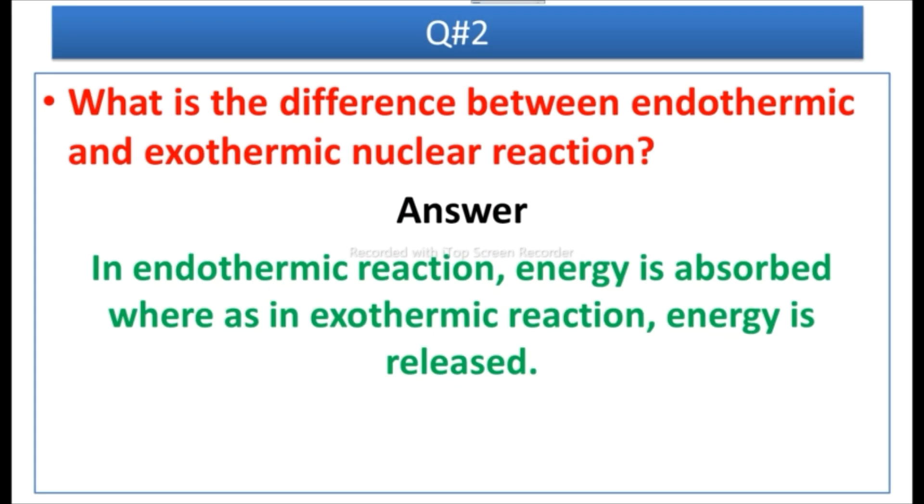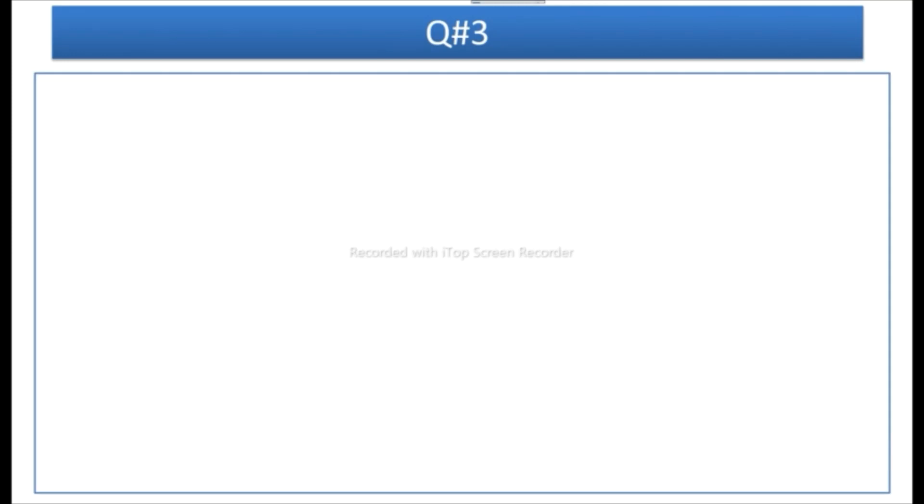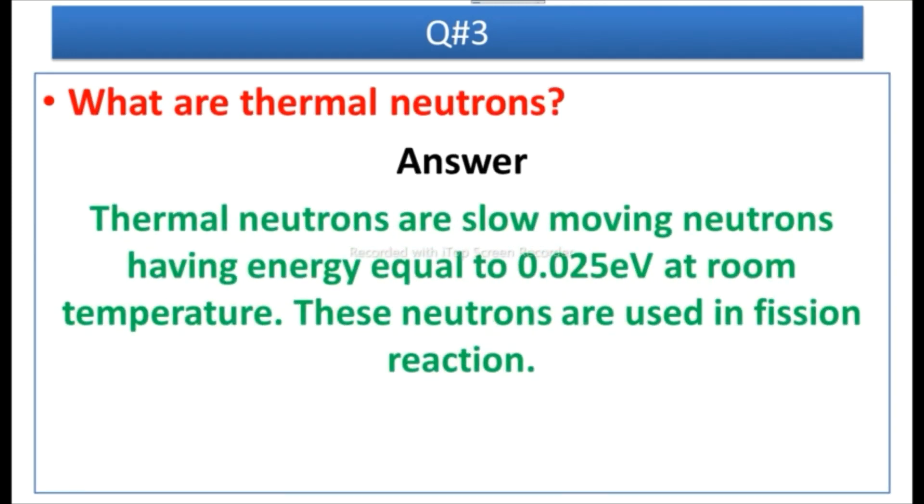Question number three: What are thermal neutrons? Answer: Thermal neutrons are slow moving neutrons having energy equal to 0.025 electron volt at room temperature. These neutrons are used in fission reaction.